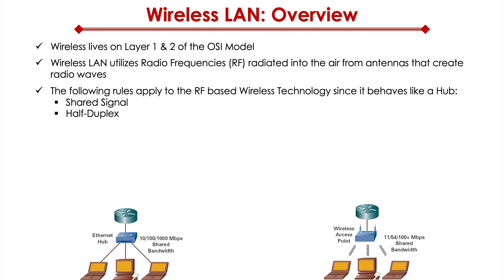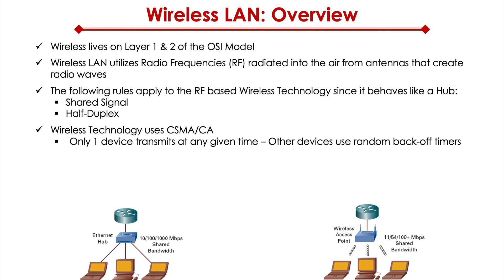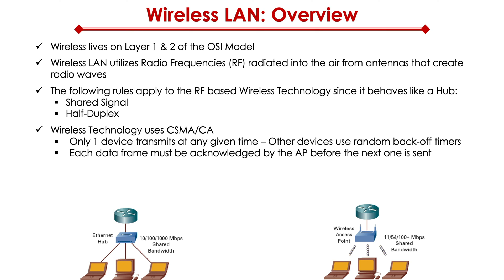Instead of wired connectivity, we're now on the wireless radio frequency. Wireless technology uses CSMA-CA, which is Carrier Sense Multiple Access Collision Avoidance. Only one device transmits at any given point in time, and other devices use random back-off timers and have to wait their turn before transmitting. Each frame must be acknowledged by the access point before the next one is sent, and if the acknowledgement is not received, we retransmit data.